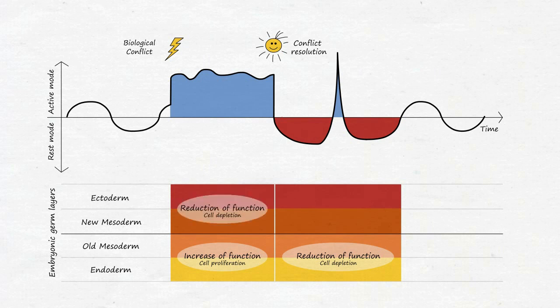Possibility 2: Here, the function of a tissue in the conflict active phase is first reduced and then increased again after the conflict has been resolved. At the epidermis, for example, this results in less sensitivity or even numbness due to the reduction in function. As with the first possibility, the normalization of the tissue function ensues. The adaptation behavior of the two possibilities is therefore exactly opposite.